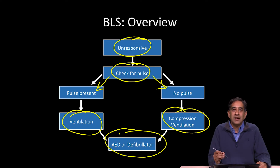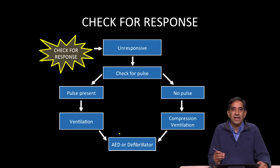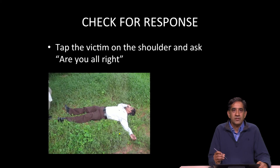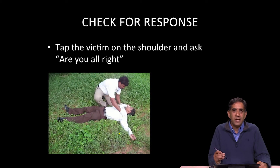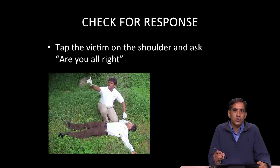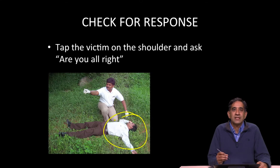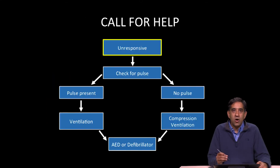So let's go through this in much more detail. First thing you're going to do when you come to a patient is check for response to see if they are responsive or not. You're going to tap the victim on the shoulder and ask them, are you all right? So this gentleman finds a patient, he looks unresponsive, taps him on the shoulder and says, are you all right? The patient does not respond, and so the first thing that he does is call for help.